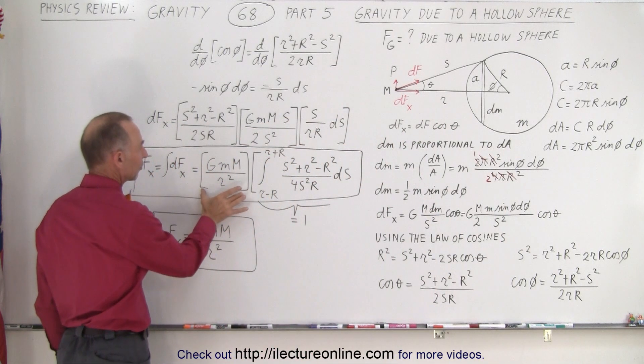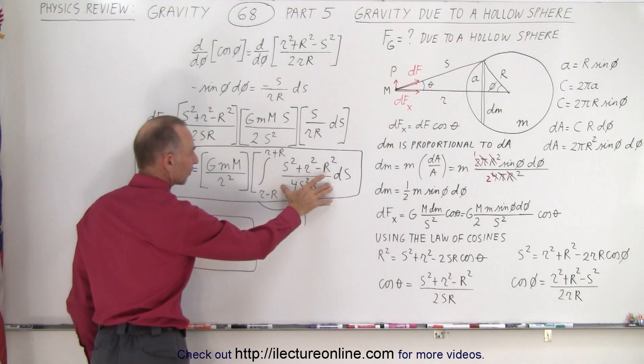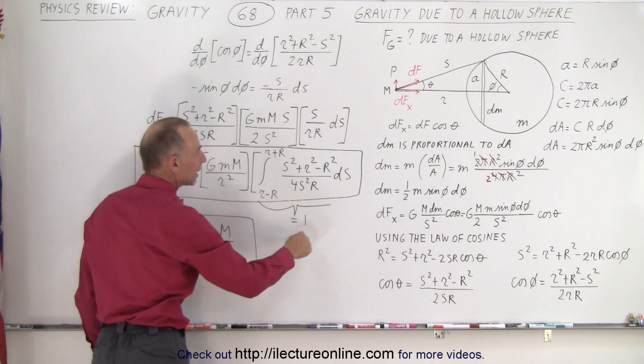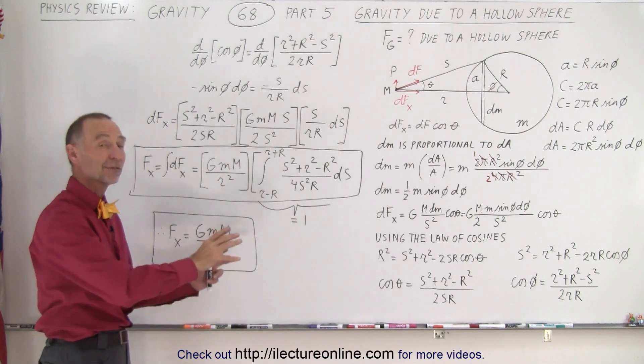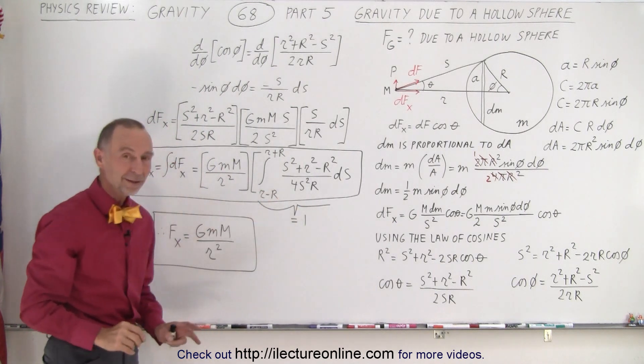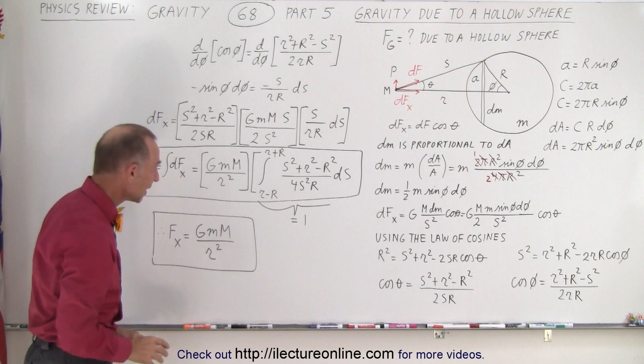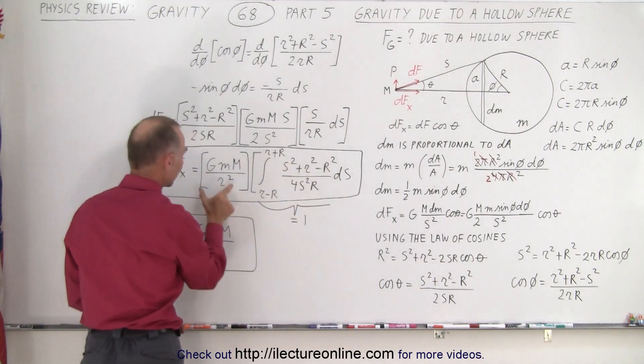And then notice we have a constant part and we have this integration. And this integration ends up being equal to one. Now, you don't have to believe me. I will show you in the next video why this is equal to one. But assume at this point it will be. So if this is equal to one, this goes away. We end up with this.